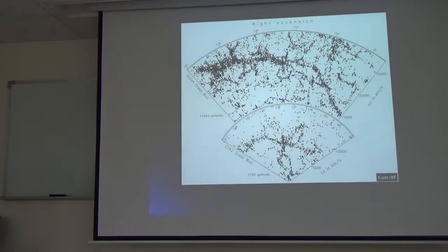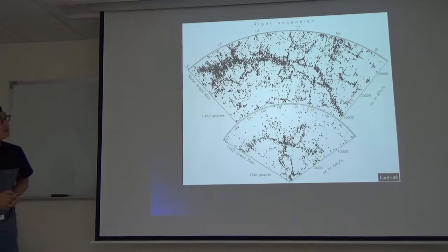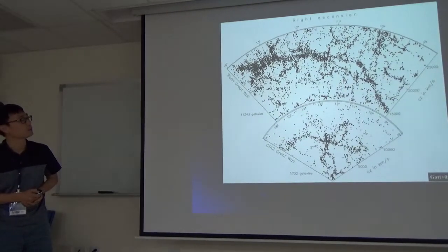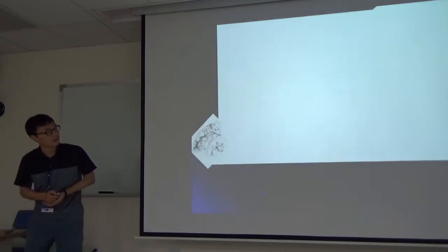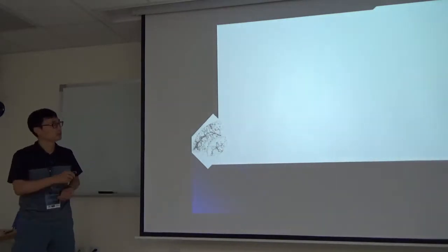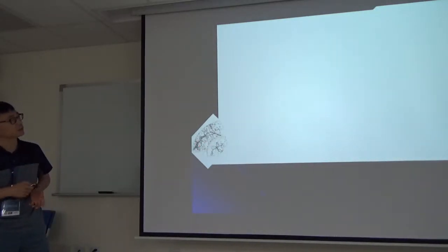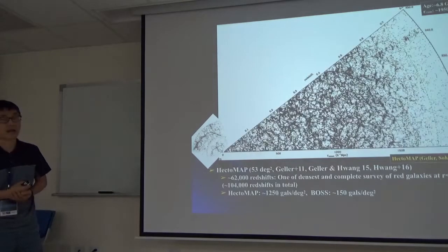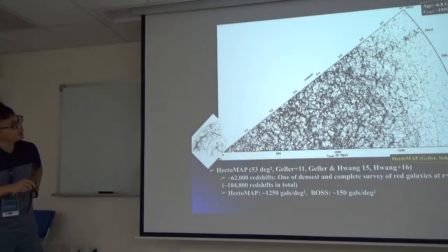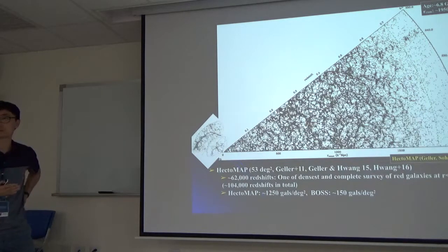Probably many of you are familiar with this kind of large-scale structures. This is the CFHT grid work from CFHT Legacy Survey and this is the Sloan grid work from the SDSS Survey. This is the same scale. I was involved in another survey called HectoMAP at the same scale. You can clearly see how large-scale structures evolved with time.